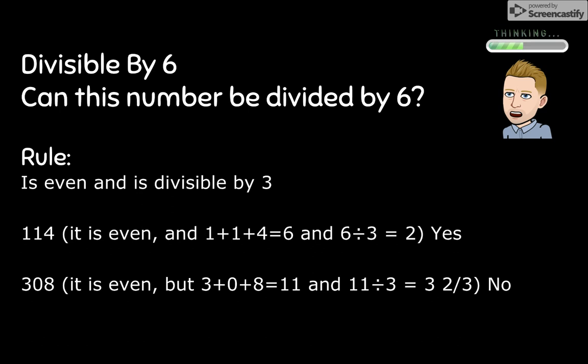So the rule is, if the number is even and if it is also divisible by 3. So you have to work out if a number is divisible by 3 as well. And we learned that in the last video. So to work that out, what you do is you add the digits in that number together. And if that number is divisible by 3 and the entire number is an even number, then that number is divisible by 6.